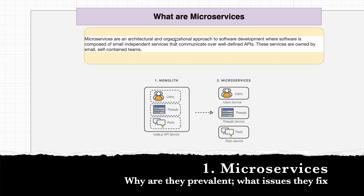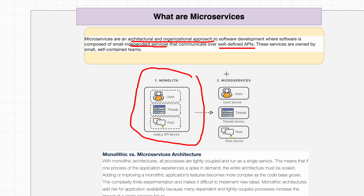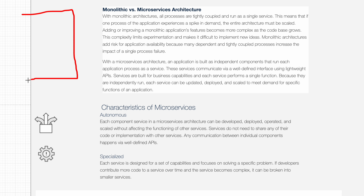What are microservices? A microservice is an architectural and organizational approach in which software is composed of small independent services that communicate over well-defined APIs. Instead of creating a monolith application where everything is bundled together, we divide independent functionalities based on the single responsibility principle, whereby every single responsibility is given to a separate microservice.